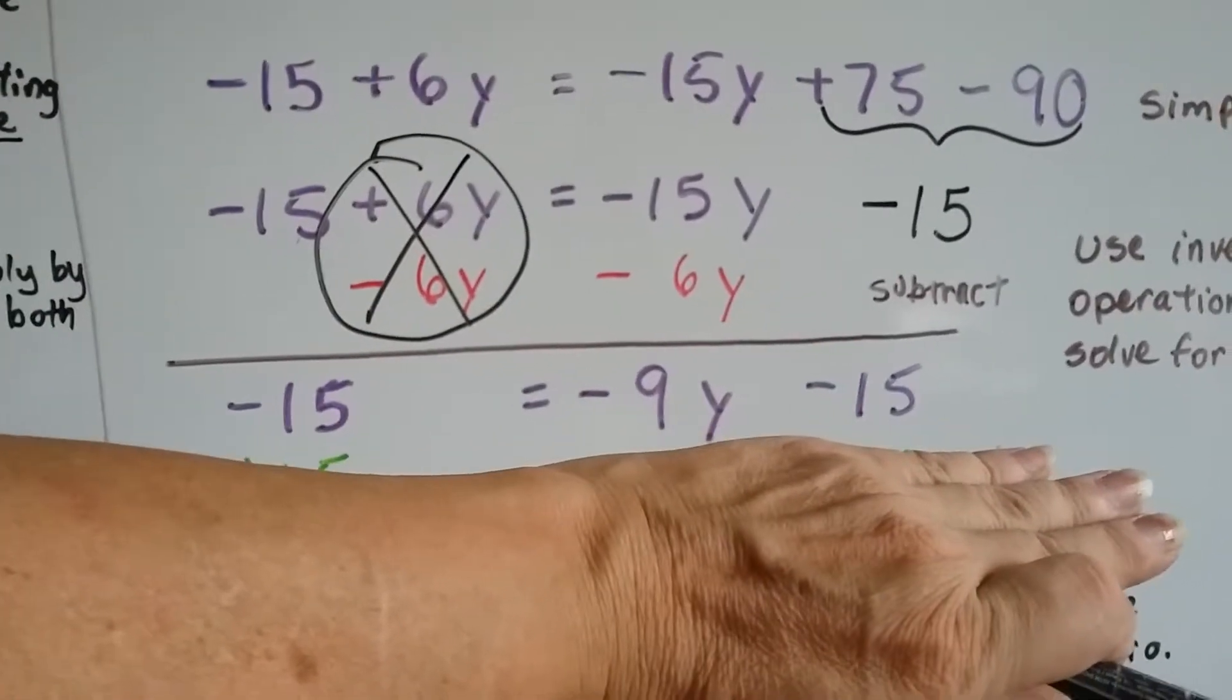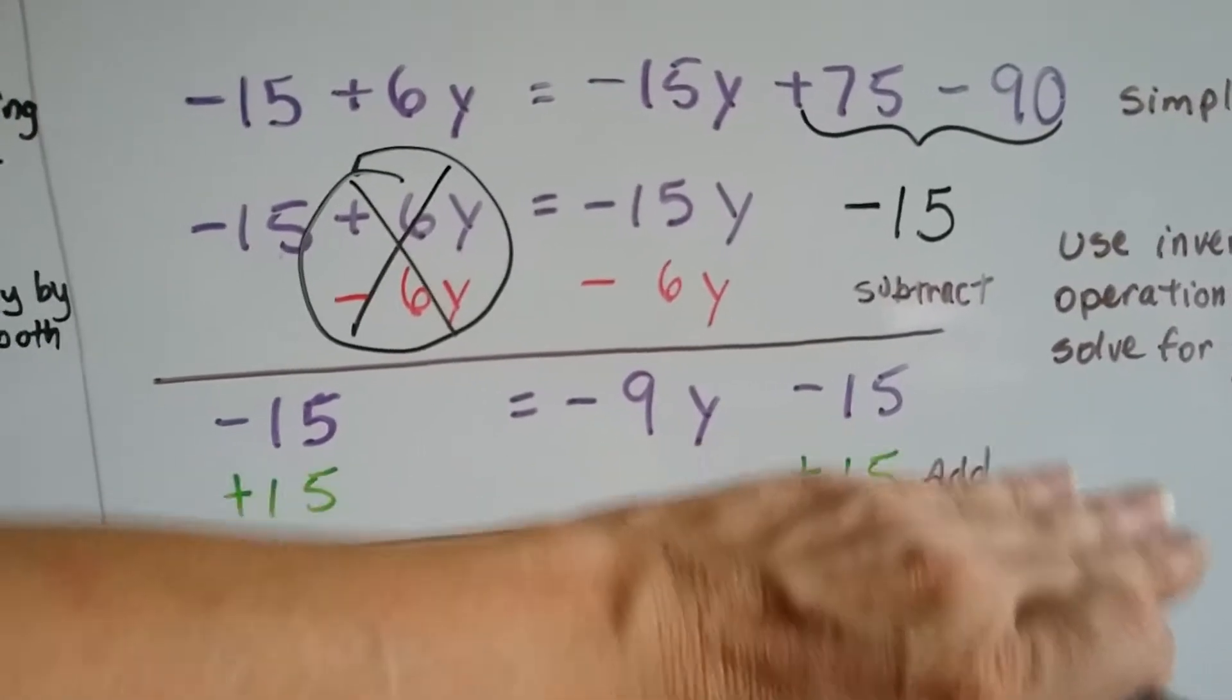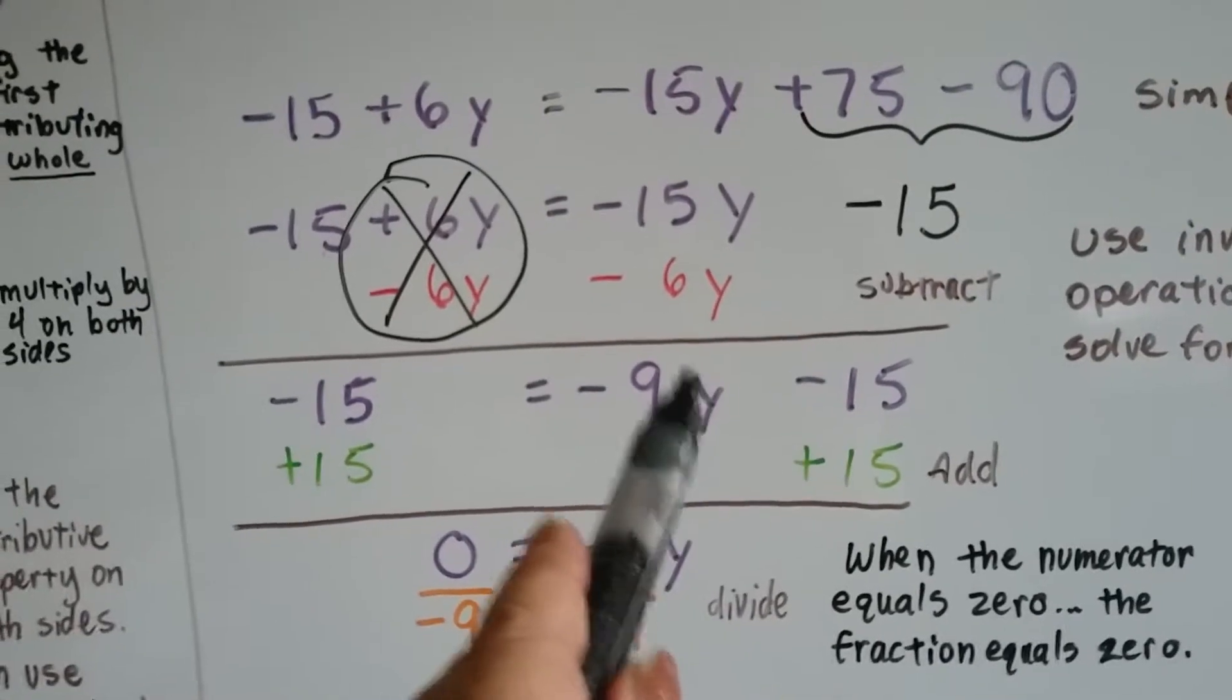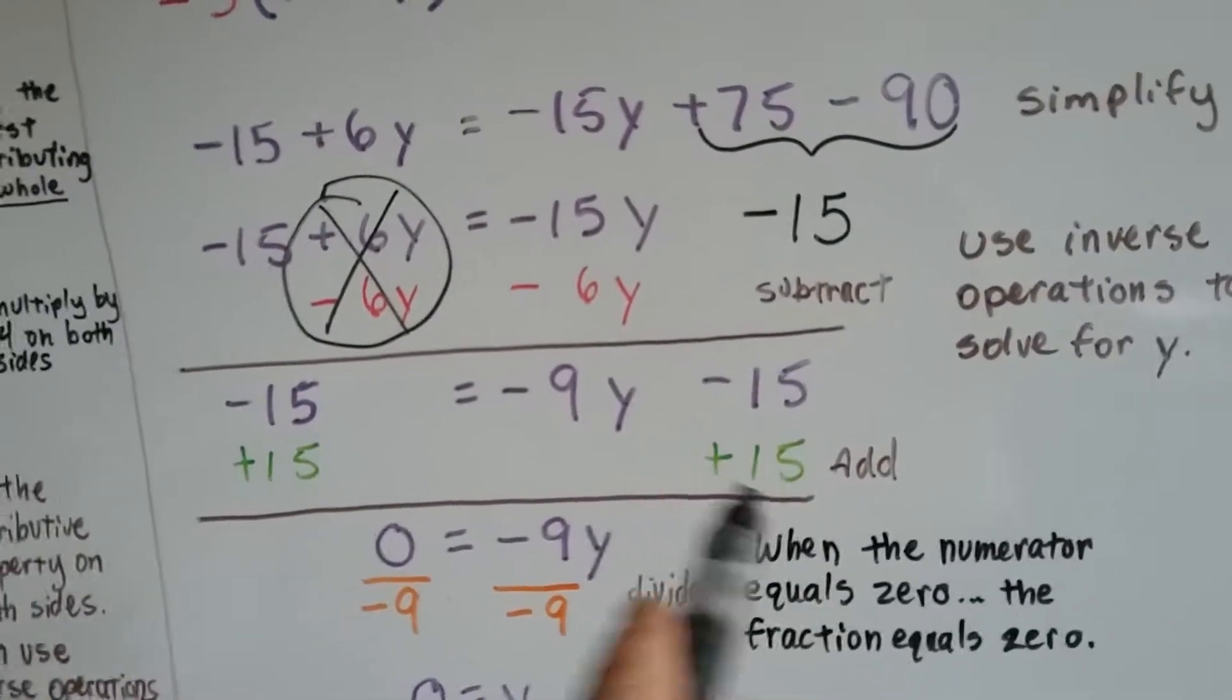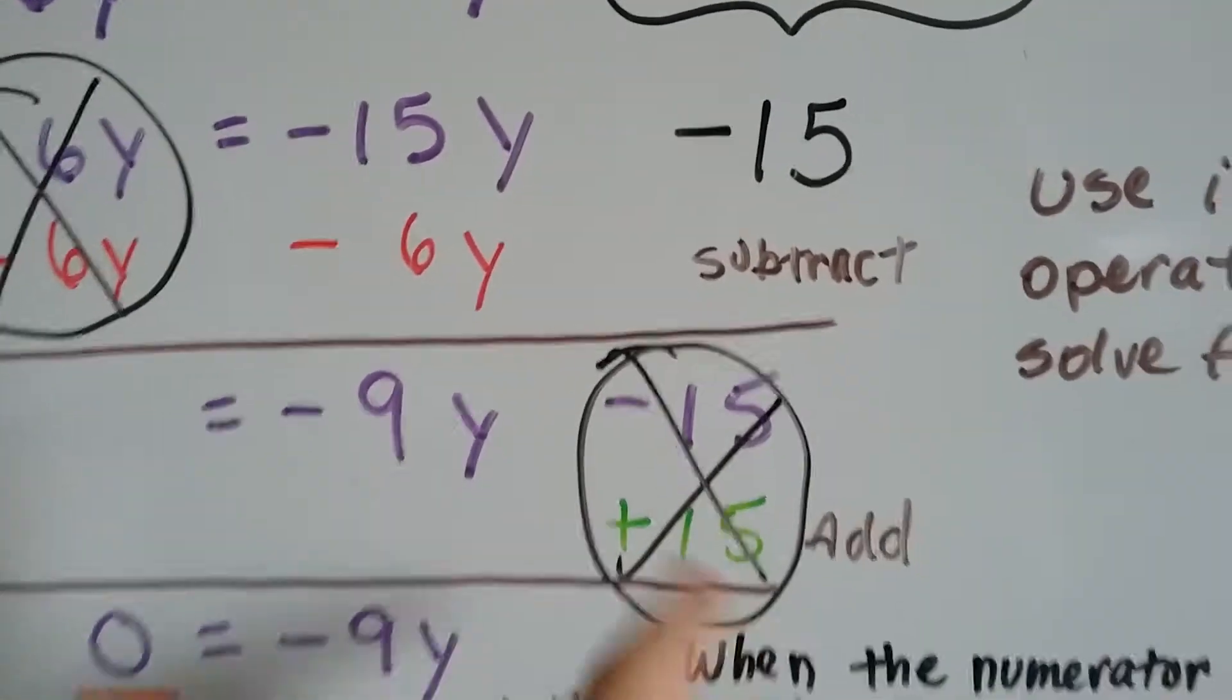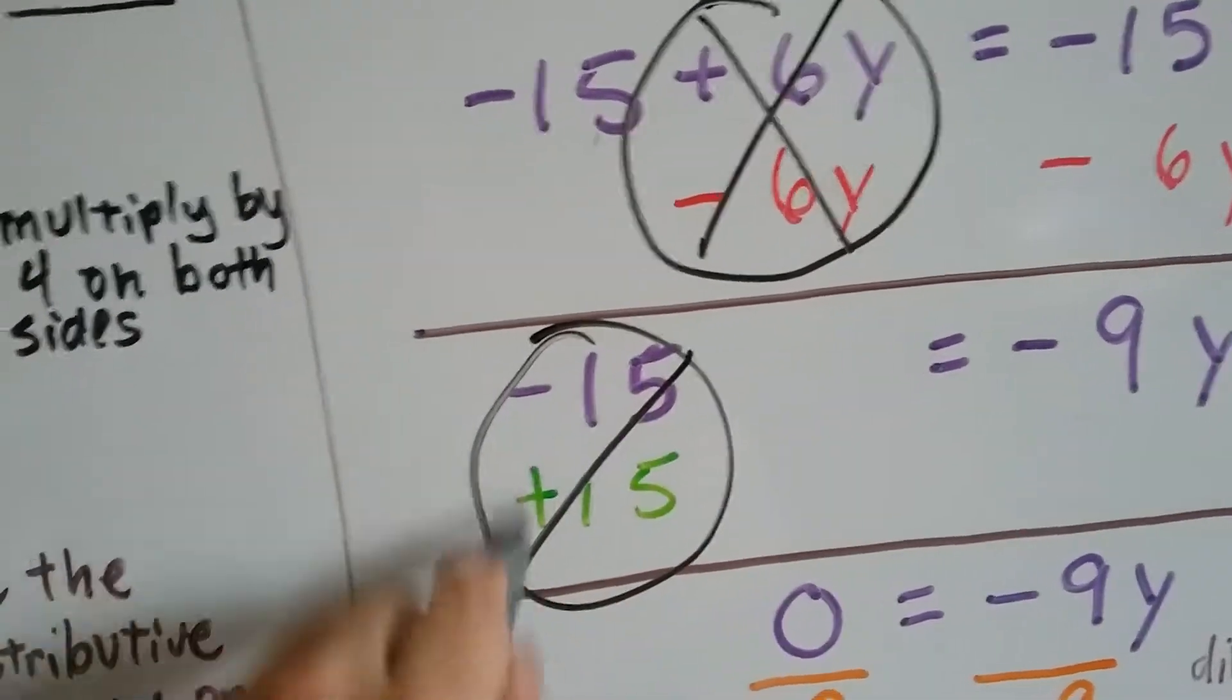Now we've got this as our equation. Negative 15 equals negative 9y minus 15. Because we have a negative 15 here, and we're trying to get this y by itself, we add 15 to both sides of the equation. We create a zero pair here, and that eliminates it. And it creates a zero pair here, and it eliminates it.